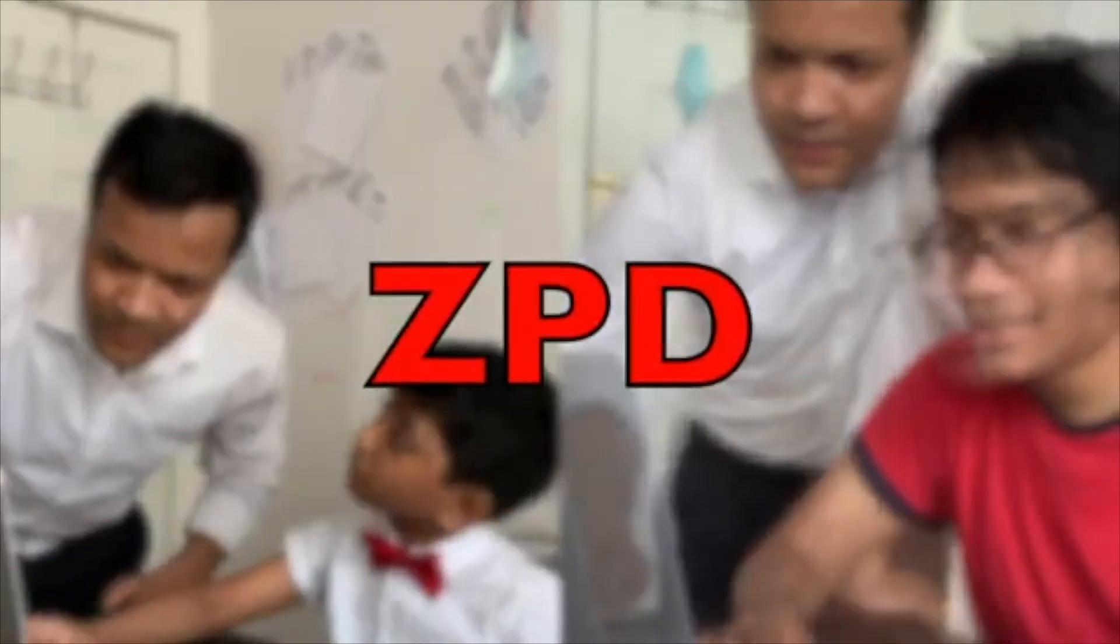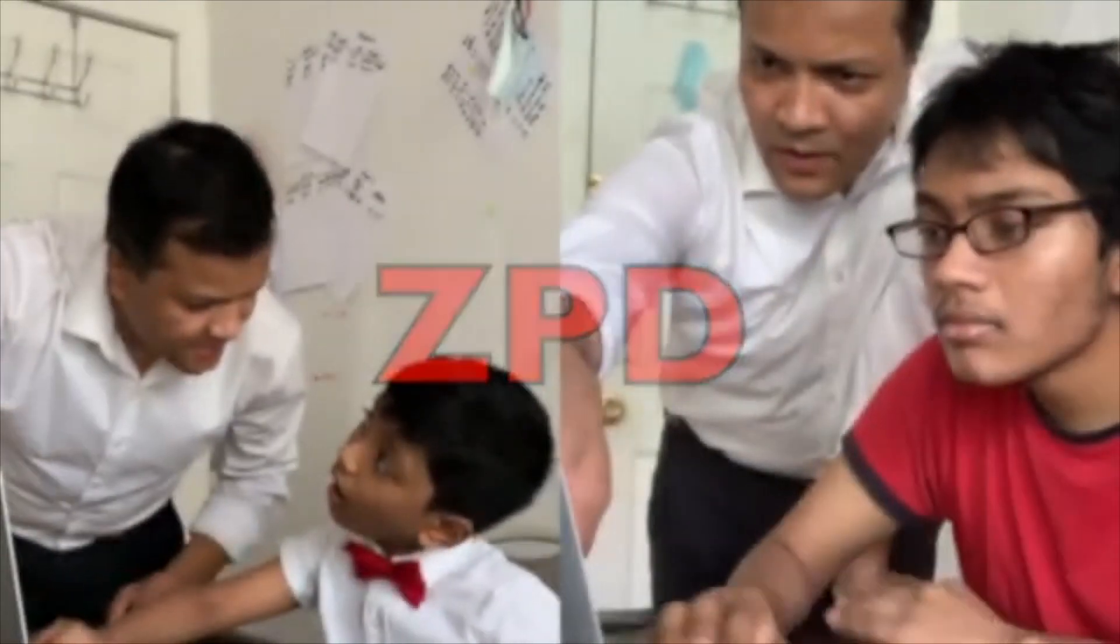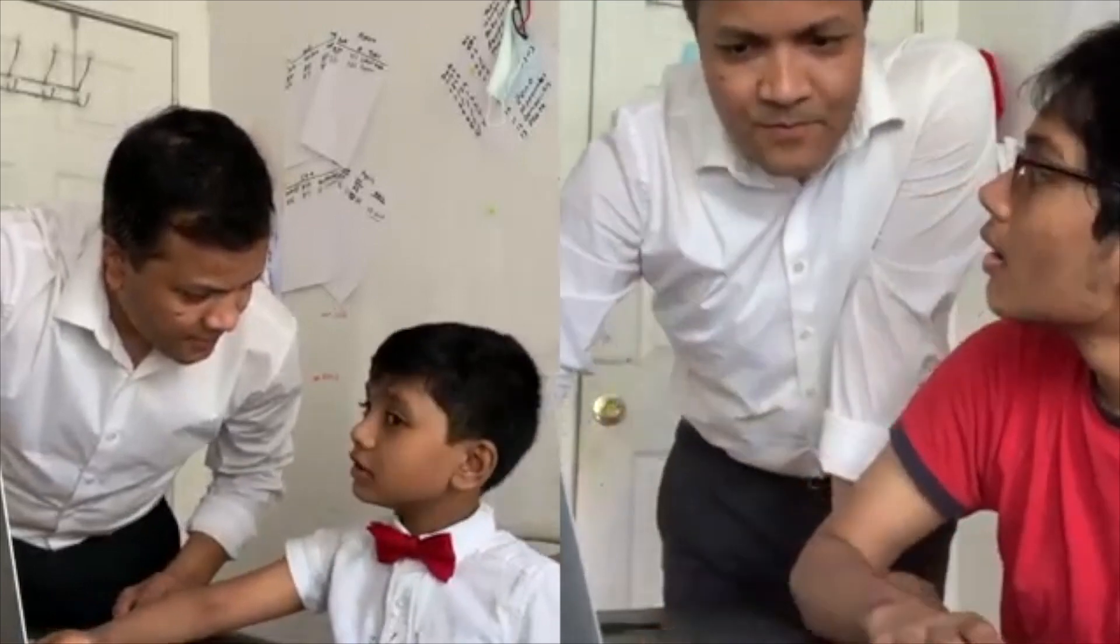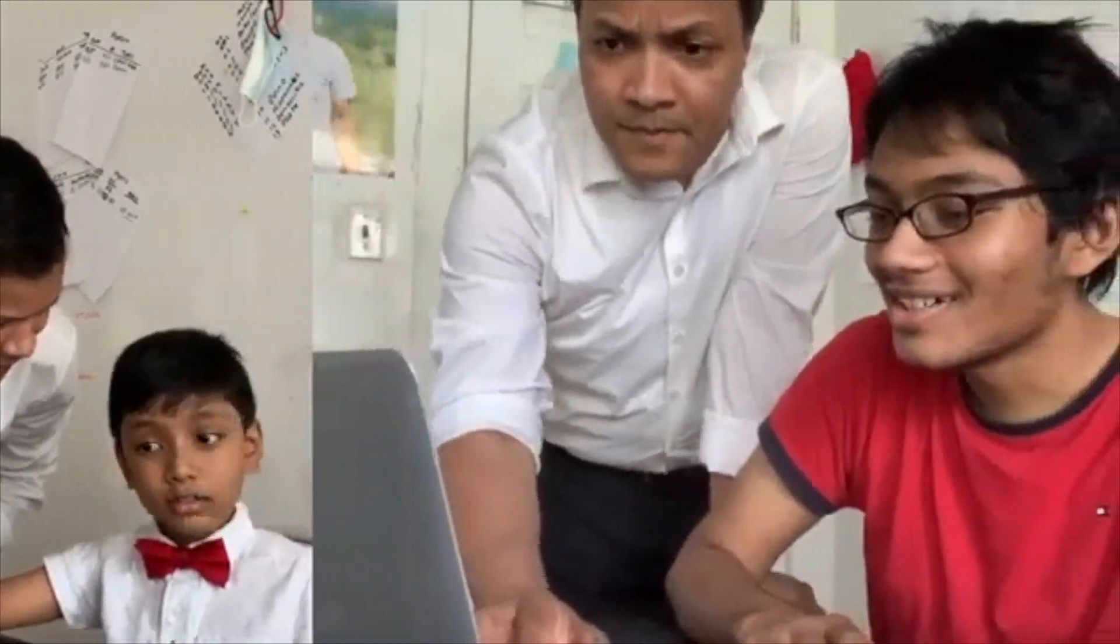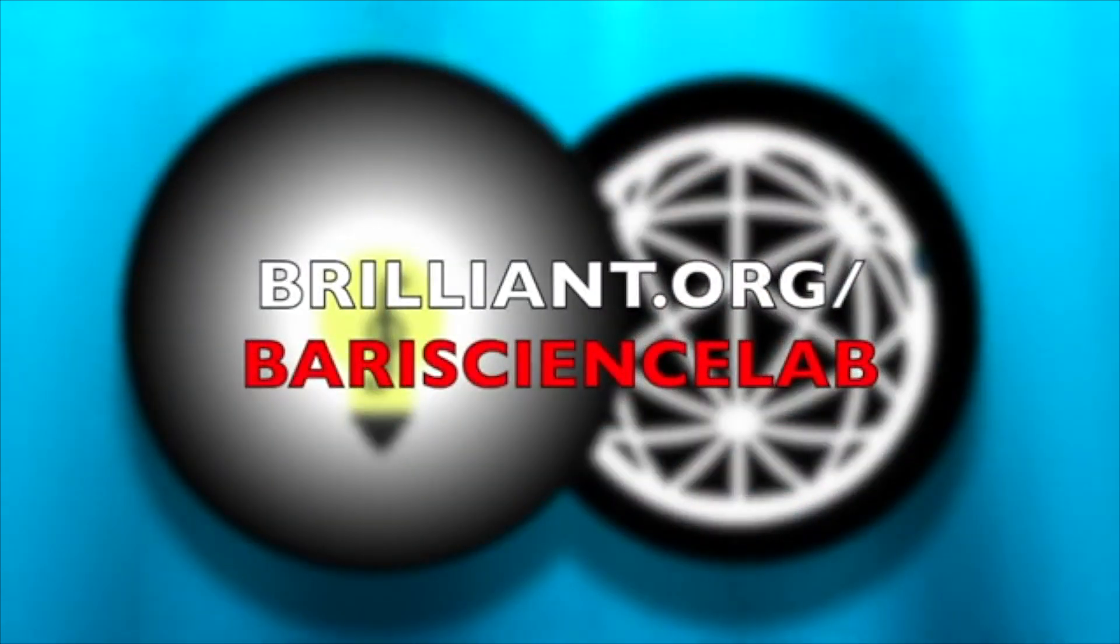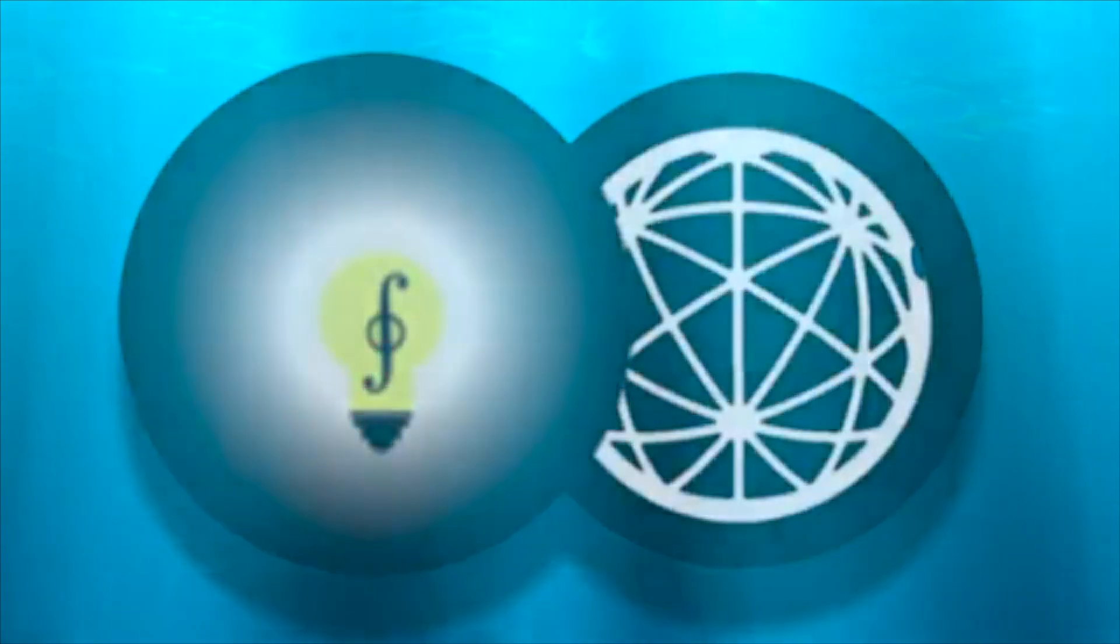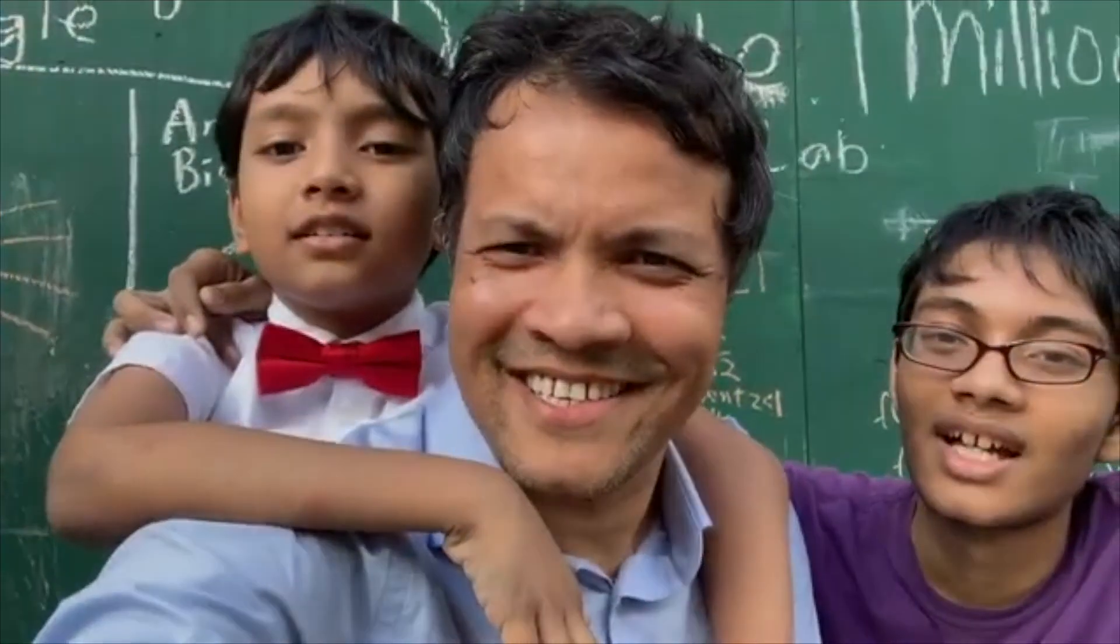And we'll give you the scaffolding to expand your ZPD until you become the next Sir Isaac Newton or Albert Einstein. Visit Brilliant.org slash battery science lab today. And the first 50 of you to use that link will get a 20% discount on the Brilliant annual subscription. Don't forget that you, too, can become the next Einstein. So let's fall in love with math and science!